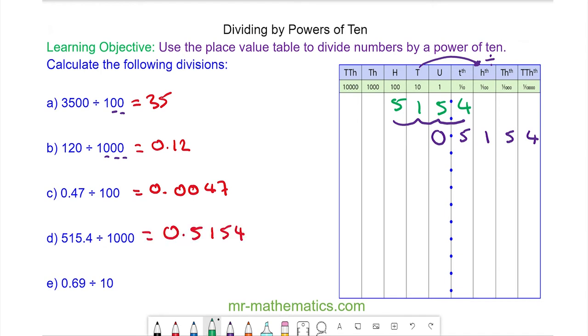And question E, 0.69 divided by 10. So we move every number to the right by one place. So we have a 9, a 6, and a 0, which is 0.069.